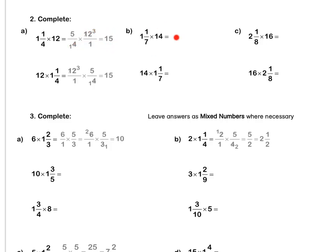Let's do B together. 1 and one seventh, we rewrite as eight sevenths times by 14 over 1. Then we simplify in our question — divide by 7, divide by 7 — and we multiply out to get 16 over 1, or just 16. Press pause to complete question 2 by yourself.